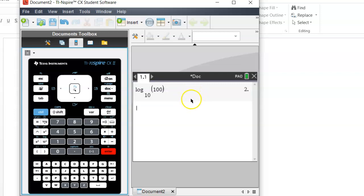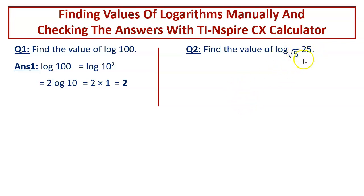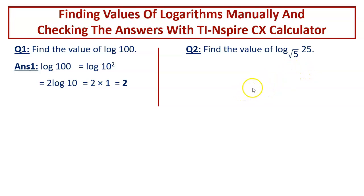Now let us come to the second question: find the value of log of 25 to the base square root of 5. We have learned how to find the values of logarithms where the base or the argument contains a radical sign in our previous session. Over there we had equated the given logarithm to X, converted it to an exponential equation, made the base on both sides the same, and equated the powers. In today's session we will be using the second method I had explained verbally in the previous session.